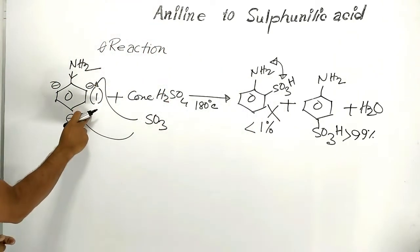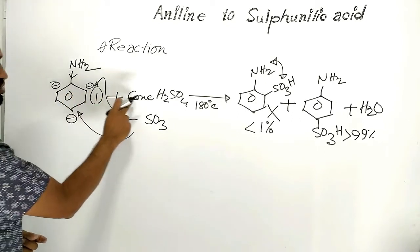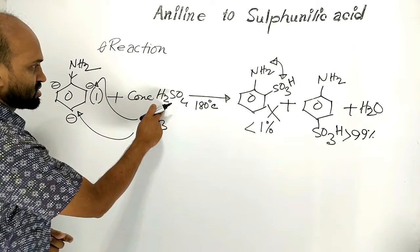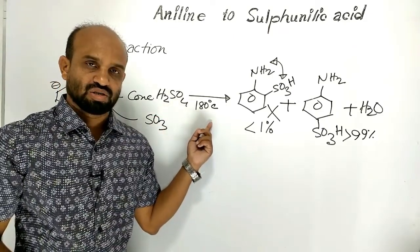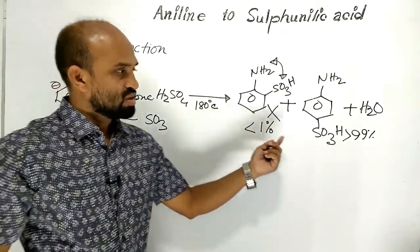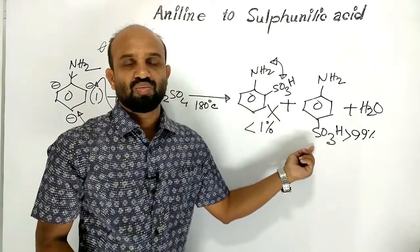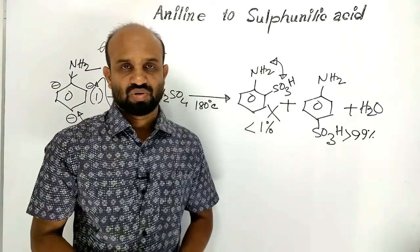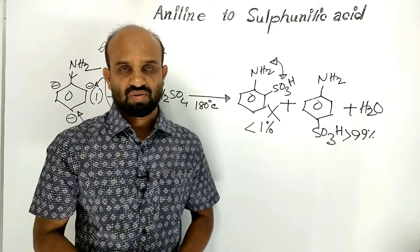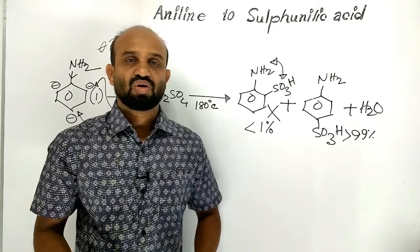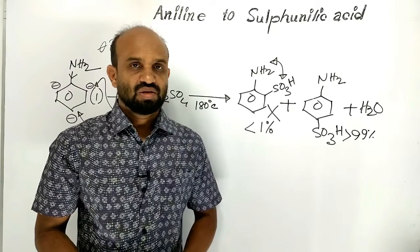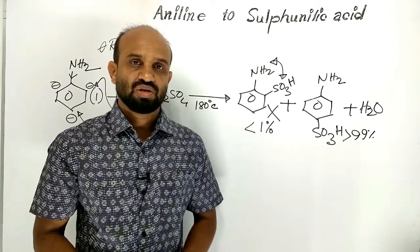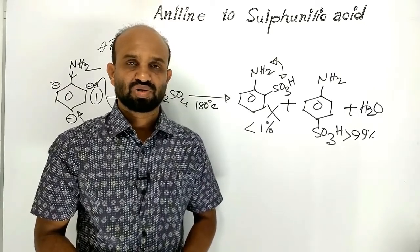Simply, we can say that when aniline is treated with concentrated sulfuric acid at 180 to 200 degrees Celsius, 4-aminobenzenesulfonic acid is formed, which is known as sulfonylic acid, also called para-aminobenzenesulfonic acid. This is the reaction by which sulfonylic acid is produced from aniline.